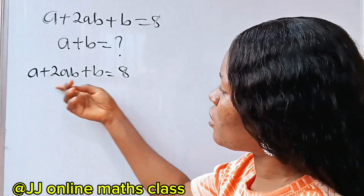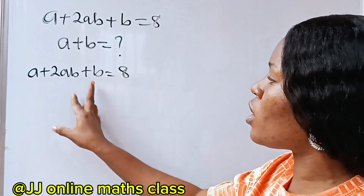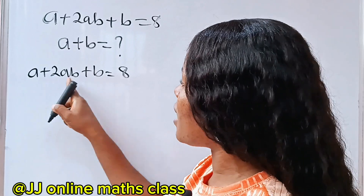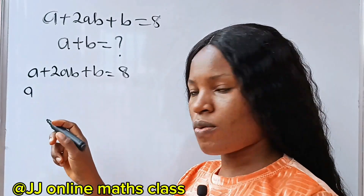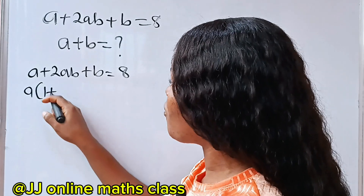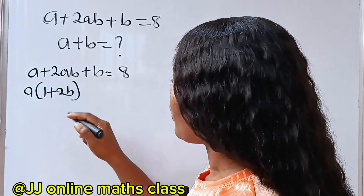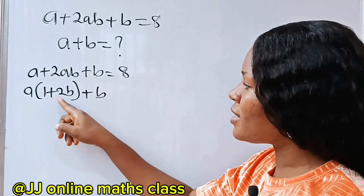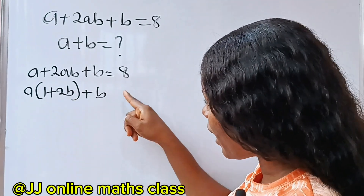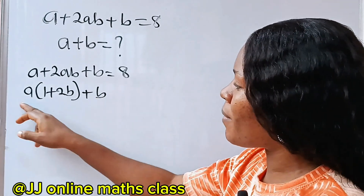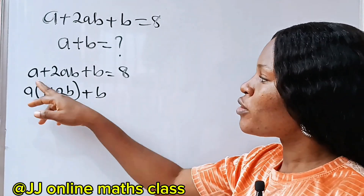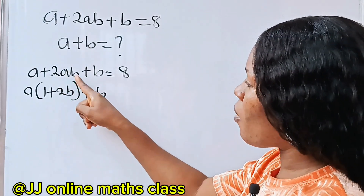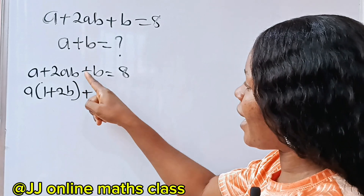Now let me factorize this. What do a and the remaining terms have in common? If I factor out a, I get: a times (1 + 2b) plus b. But you notice there's nothing I can do here, because I need another part that also has (1 + 2b) so that I can group them — but there isn't one. So factoring a out from here will not work.